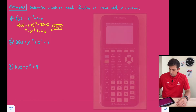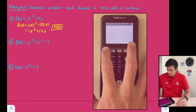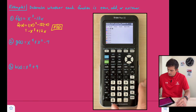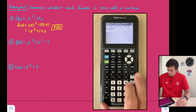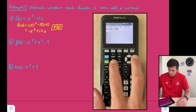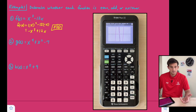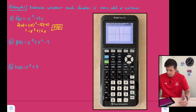Now if we go to our calculator, go into y equals, and graph the function x cubed minus 12x, it should appear to be symmetric about the origin. And that's what we see on the graph right there.